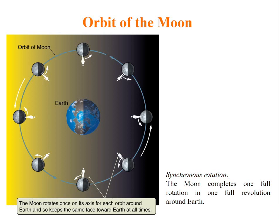Let us learn about Moon and orbit of Moon. The Moon rotates once on its axis for each orbit around Earth, so it keeps the same face towards Earth at all times.